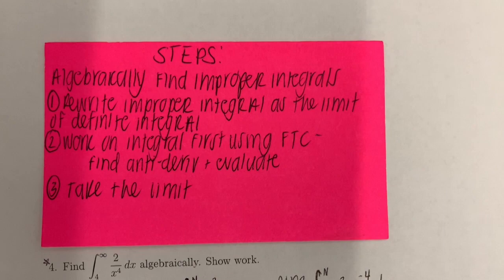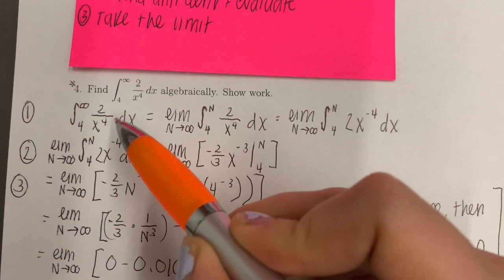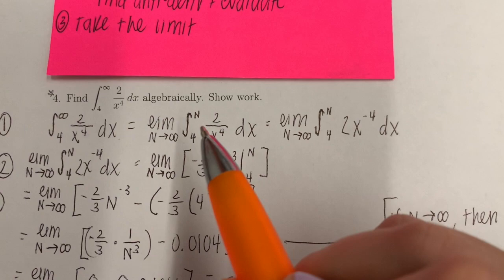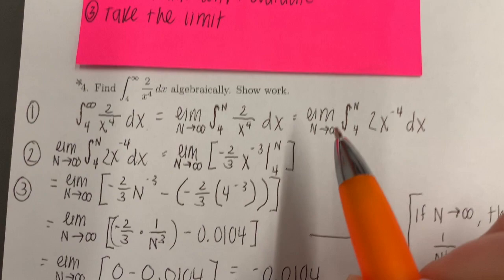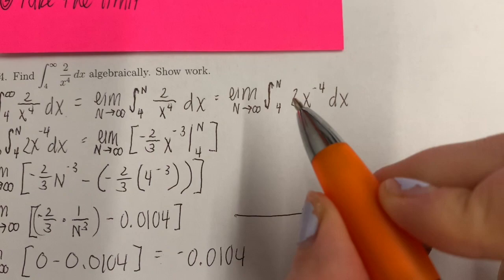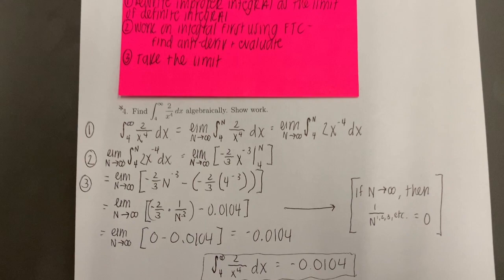Step 1, we're going to rewrite the improper integral as the limit of the definite integral. We take the given definite integral and rewrite it as the limit as n approaches infinity of the integral from 4 to n of 2 over x to the 4th dx. I rewrote that as the limit as n approaches infinity of the integral from 4 to n of 2 times x to the negative 4th dx.